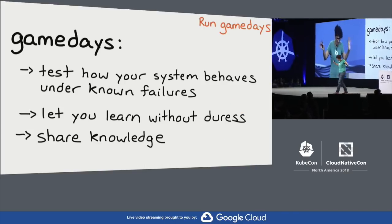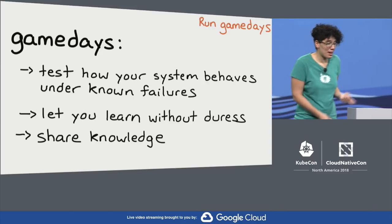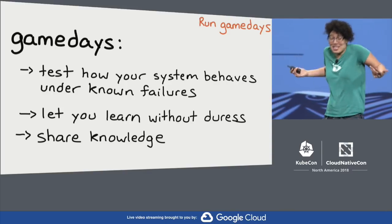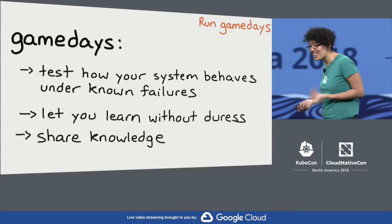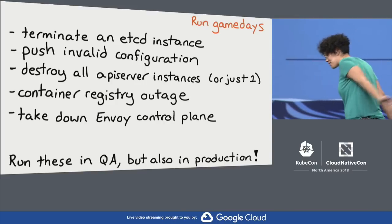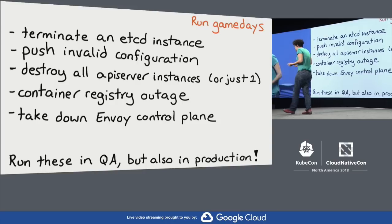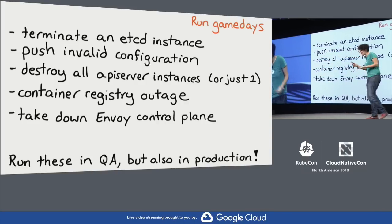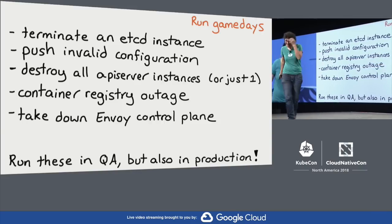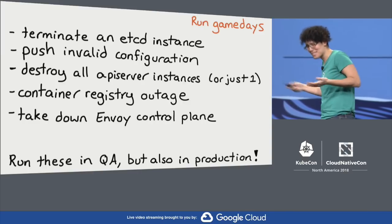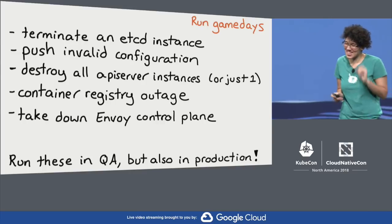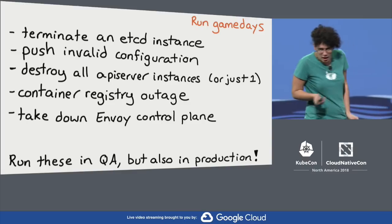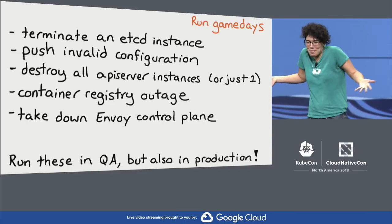We call these game days — lots of people have other names for them. What they do is test how your system behaves under known failure conditions. When those failures happen, it lets you learn how to deal with them — not at four in the morning, which is when I've learned about some failure conditions. One of my favorite game days with Kubernetes is to terminate all the API servers and see what happens. The first time I did this I was like, 'will my pods keep running?' And they did. But we did this again recently, and there are now some problems because we've made our system more complicated. So it's good to run these things repeatedly, even when you think you know how your system works.